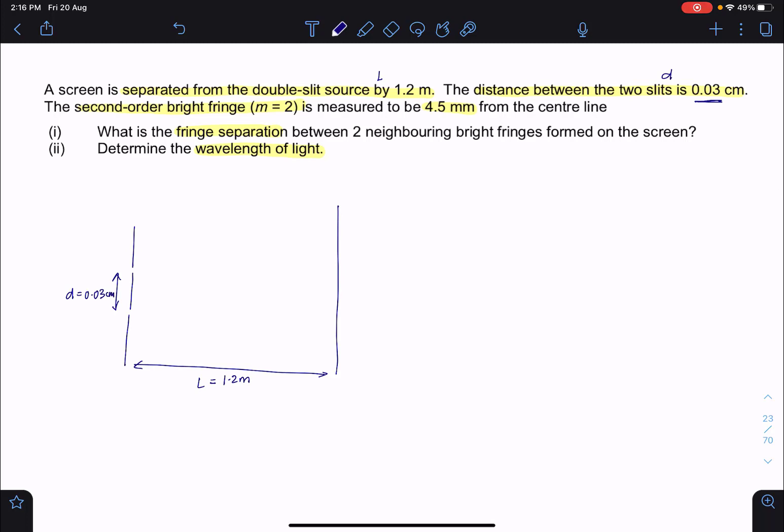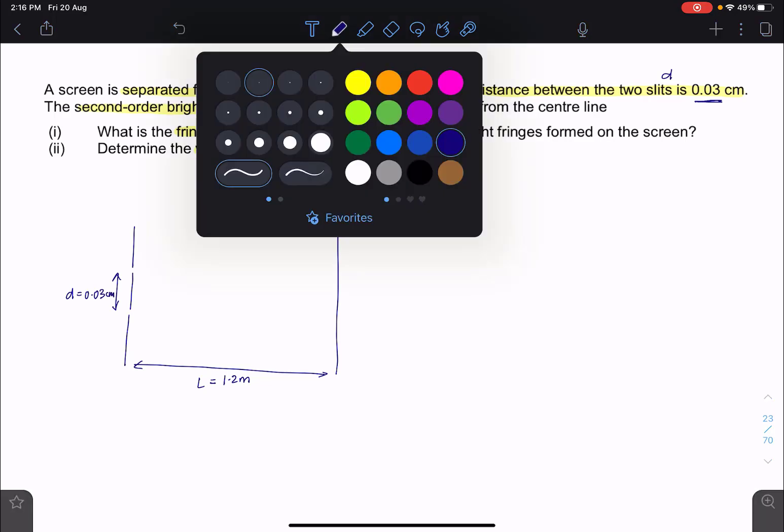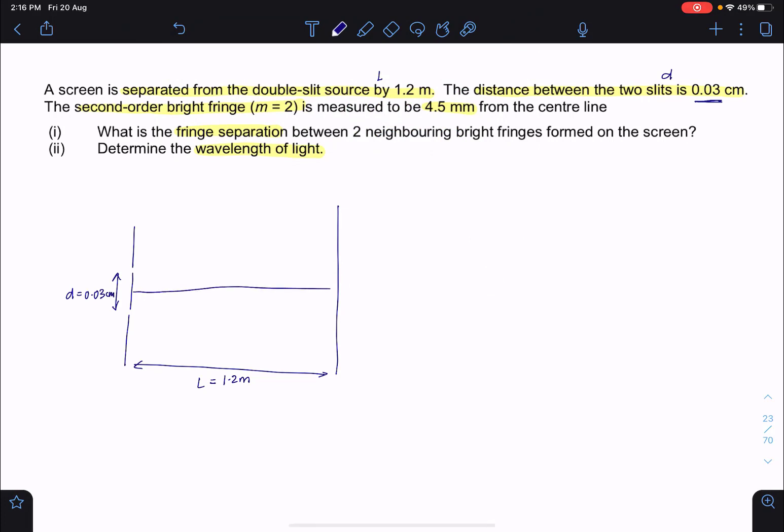Now we are also told we observe a second order bright fringe and it's measured 4.5 millimeter from the center line. I'm going to exaggerate this a little bit, not draw this to scale so that we can see. But what we have is, we have a center line, I'm going to draw in my center line. And somewhere at here, we're going to observe the second order maximum. So this is M equals to 2 and you are told that it is actually measured at 4.5 millimeter from the center line. Now if you compare this 4.5 millimeter, this is what we call Y,